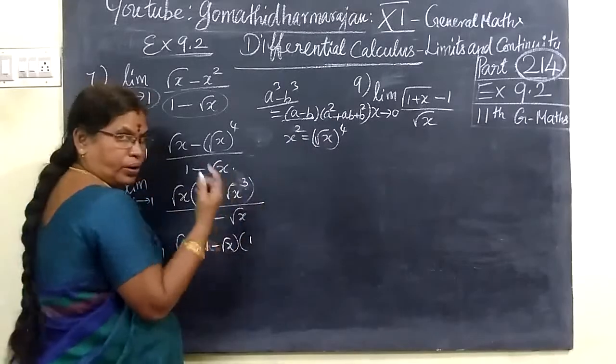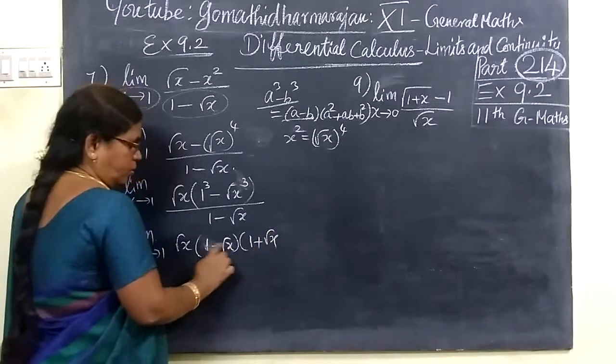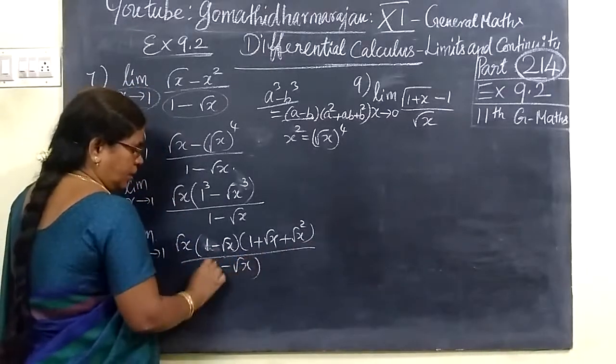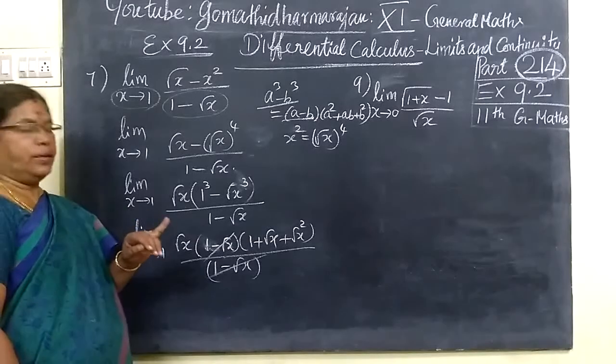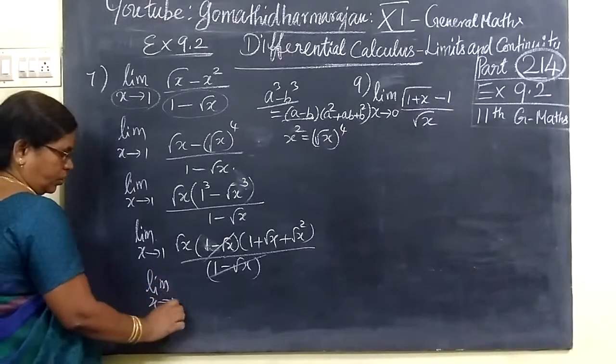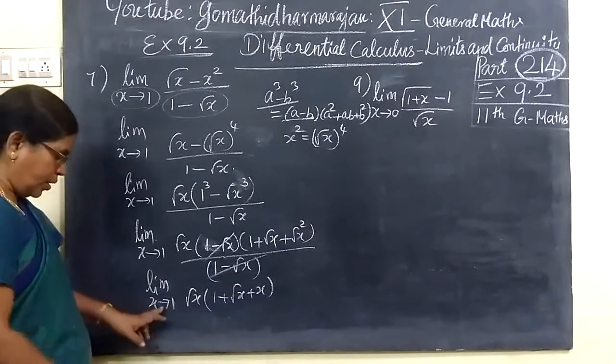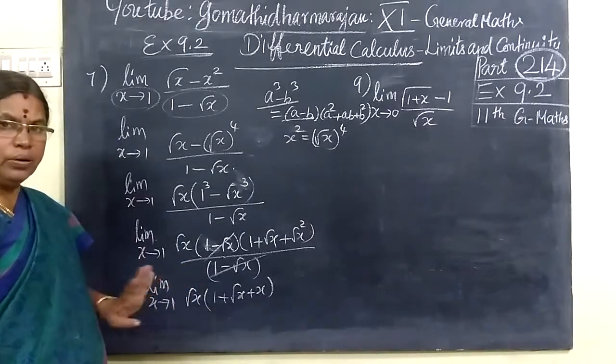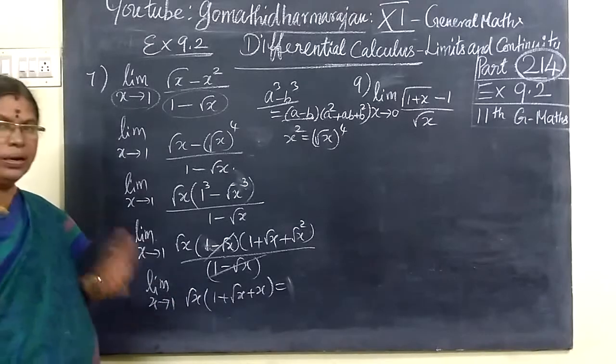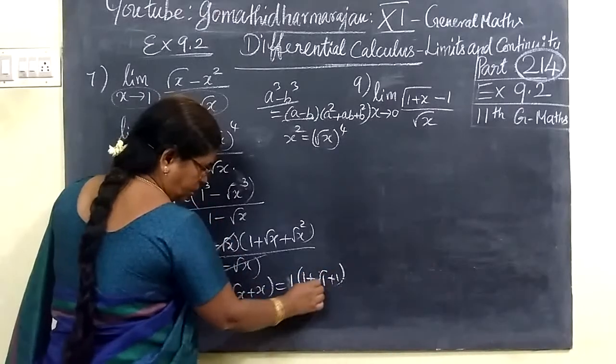One minus root x, then a square is a square plus AB. This minus, root x square minus x square. So one into root x, root x plus root x squared. Here one minus one cancels. So root x times one plus root x. This is root x. Now we have directly limit. No need to worry about the formula.